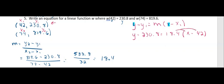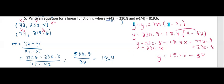We can distribute. So y minus 230.8 equals 18.4x minus 18.4 times 42 gives us 772.8. And then add, because we want to get y equals, so we need y by itself. So we'll add our 230.8 to both sides, and we're left with y equals 18.4x minus 542.